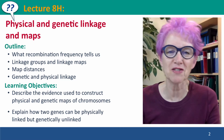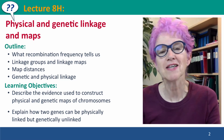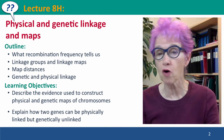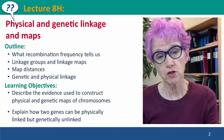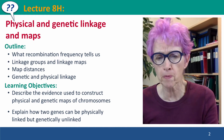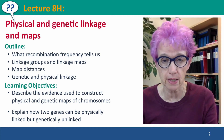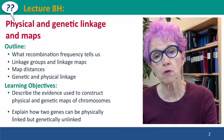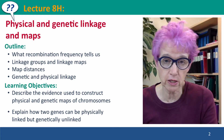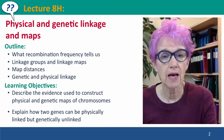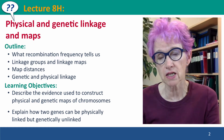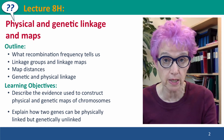Hi, everyone. Welcome back to Useful Genetics. This is lecture 8H, where we're going to continue our discussion of the physical locations of genes and chromosomes, focusing more on the bigger picture of physical maps and especially genetic linkage maps. We'll talk about what recombination frequency tells us, about linkage groups and linkage maps, map distances, and about the differences between genetic linkage and physical or covalent linkage.